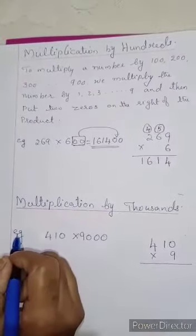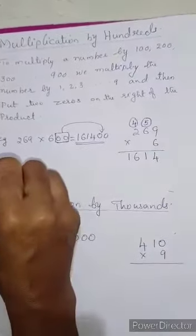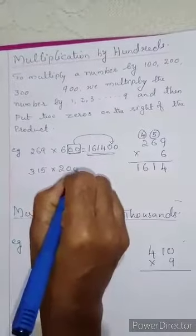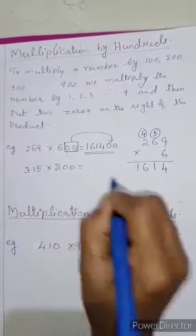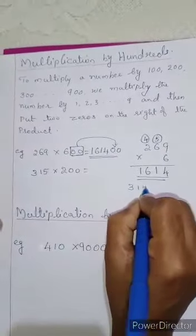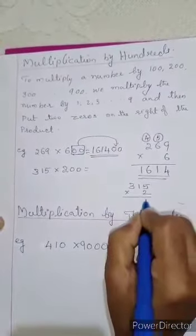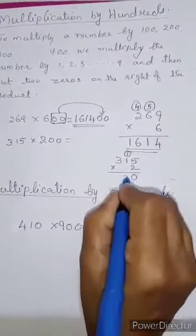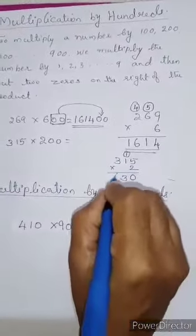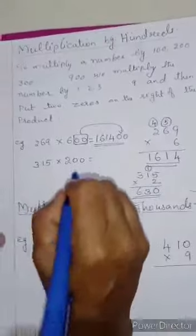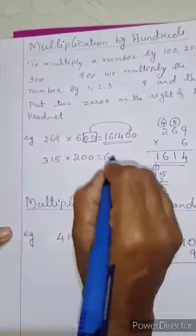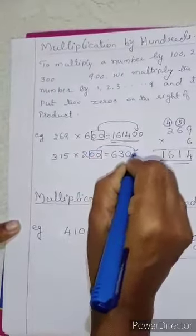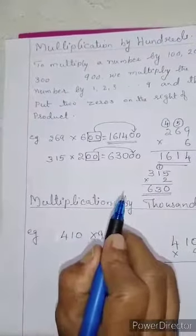One more example: 315 multiplied by 200. Multiply 315 by 2. 2 into 5 is 10, write 0 and carry 1. 2 into 1 is 2 plus 1 is 3. 2 into 3 is 6. You got 630. Then add 2 zeros at the right side of 630. So your answer is 63,000.